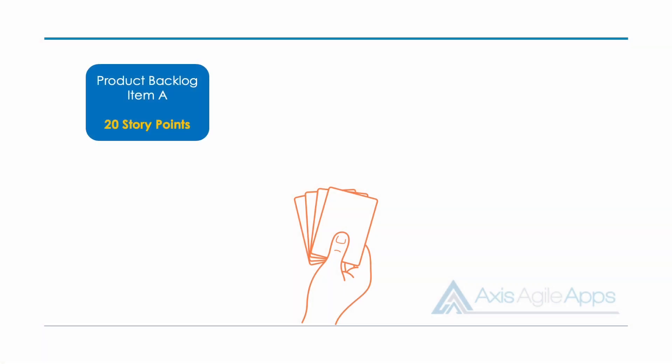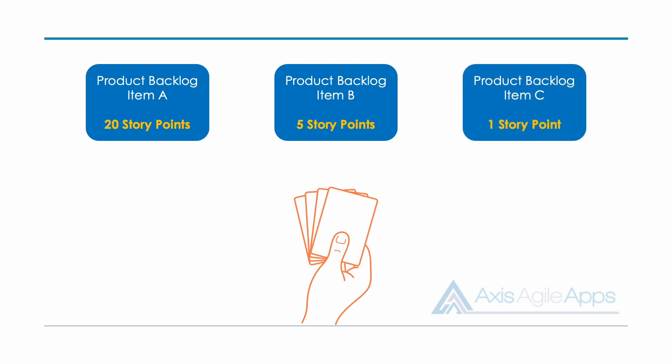Let's imagine a team is using the physical cards. They'll look at the cards and decide how many points they feel the item is, by comparing to some benchmarks. Ideally, the team has some existing product backlog items they've estimated in the past — for example, an item that is 20 points, another that is five points, and another that is one point. They compare the new item to those previous items and decide if it's about the same size, or higher or lower.